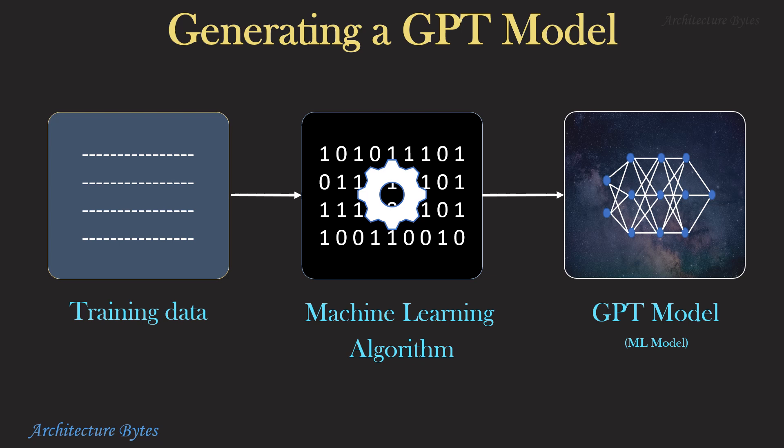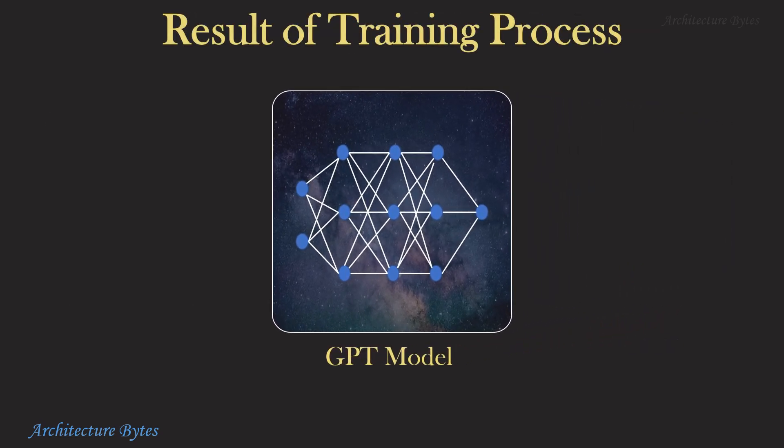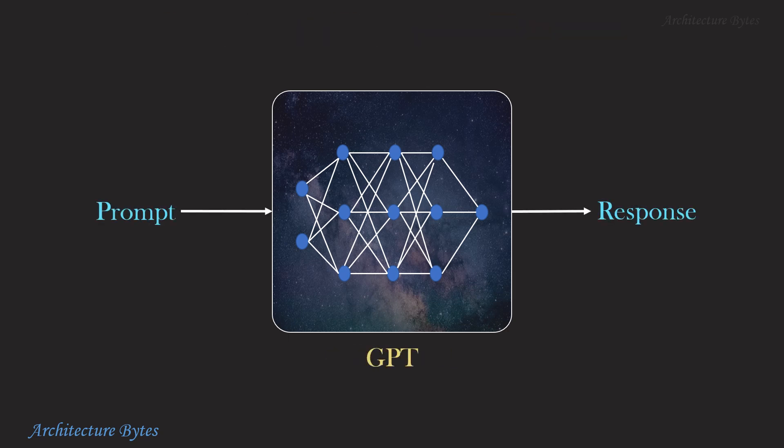For GPT, the training data is terabytes of text from the internet. This is unsupervised learning, and later it undergoes supervised training to fine-tune it. The result of the training process is a neural network with billions of connections between millions of neurons. Training such a large language model is an expensive process in terms of time and computing resources. Initially, such models may produce moderately accurate outputs, but with feedback and enough training, they become more and more accurate and can produce human-intelligible text as good as text written by a human.